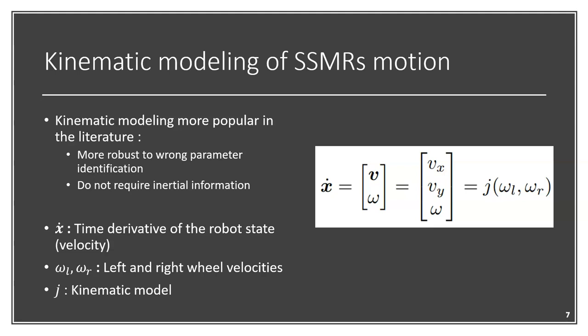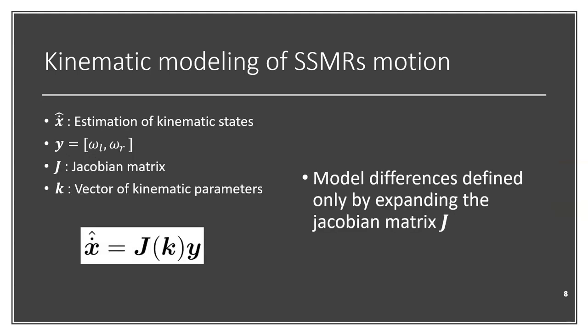Now, what does a kinematic model aim to do? It aims to compute the time derivative of the robot's state, which is the robot's velocity in the plane as well as its angular velocity, by using the knowledge about the wheel velocities on the left and right side of the body as inputs. The relation between both of them is given by the kinematic model J. In other words, the kinematic model provides an estimation of the kinematic state of the robot by using the left and right wheel velocities of the robot as inputs.